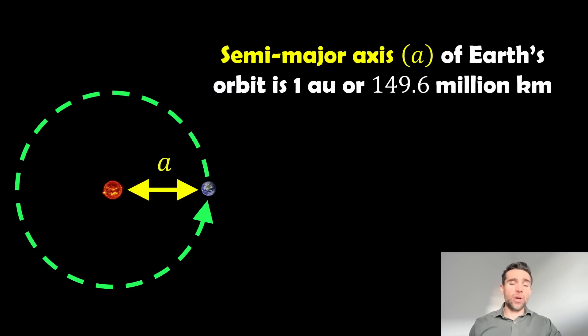If we do that and put it into the equation, we end up with Earth's orbit is 1 AU, which is one astronomical unit, but it also relates to 149.6 million kilometers.